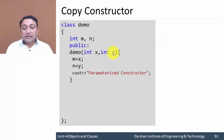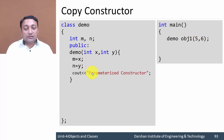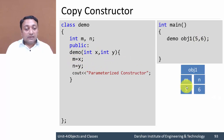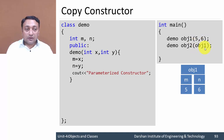Let us see an example of the copy constructor. We have class demo with one parameterized constructor. We create object1 passing arguments 5 and 6, which calls the parameterized constructor and assigns 5 and 6 to data members m and n. Now if I create object2 and pass object1 as an argument, the copy constructor should be written accordingly.